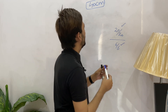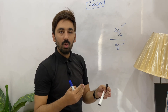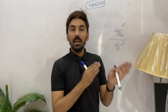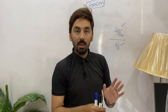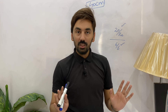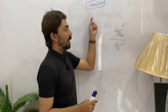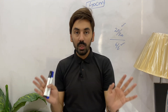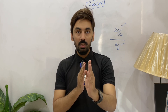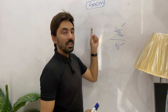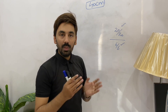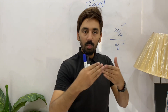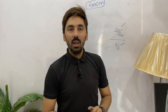In static retinoscopy the working distance is 67 centimeters, but this is dynamic retinoscopy, not static retinoscopy. In dynamic retinoscopy we do not correct refractive errors. The distance will be 40 centimeters because 40 centimeters is actually the reading distance of the patient. So the distance between the retinoscope head and the patient's pupil should be 40 centimeters.